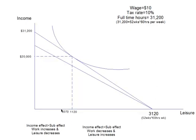I'm going to assume in this case that the person chooses to work more — an extra 50 hours. That implies the income effect is greater than the substitution effect. The reason there's an income effect causing more work: since you only get to keep $9 an hour instead of $10 an hour, you have to work more hours to make the same income.